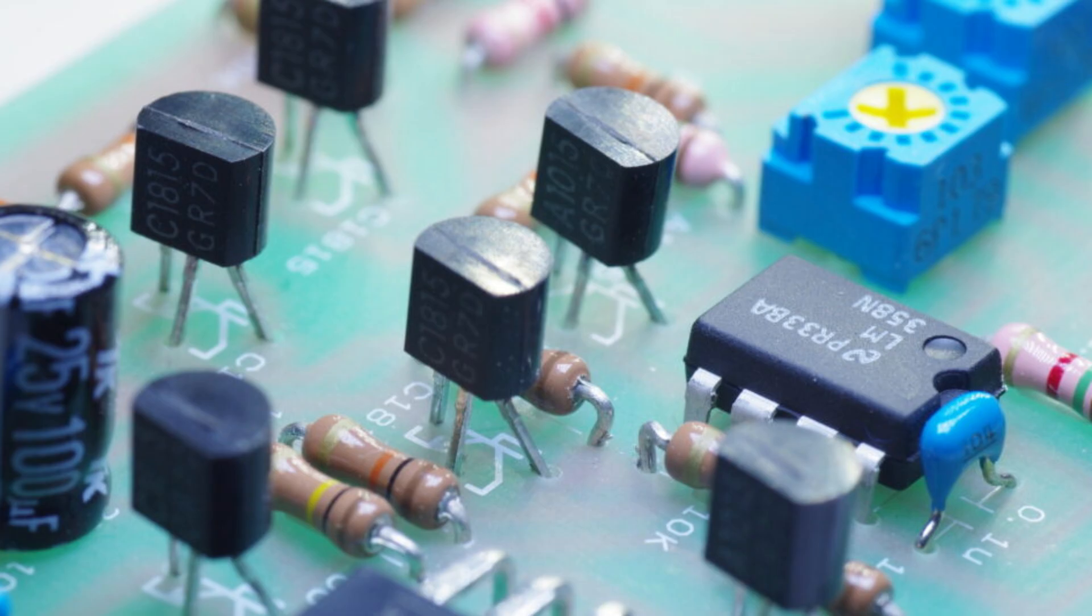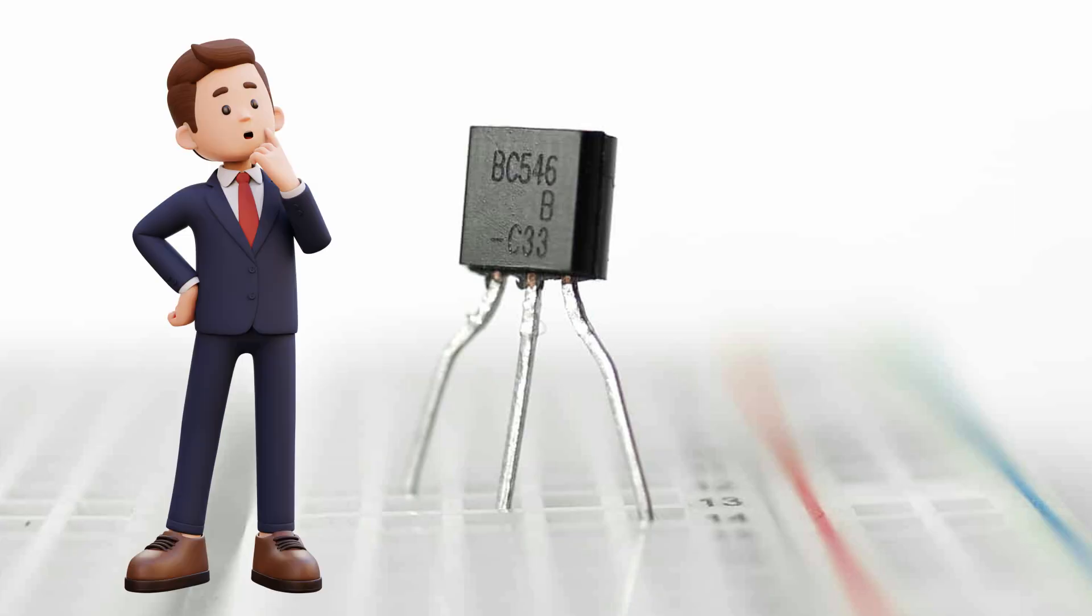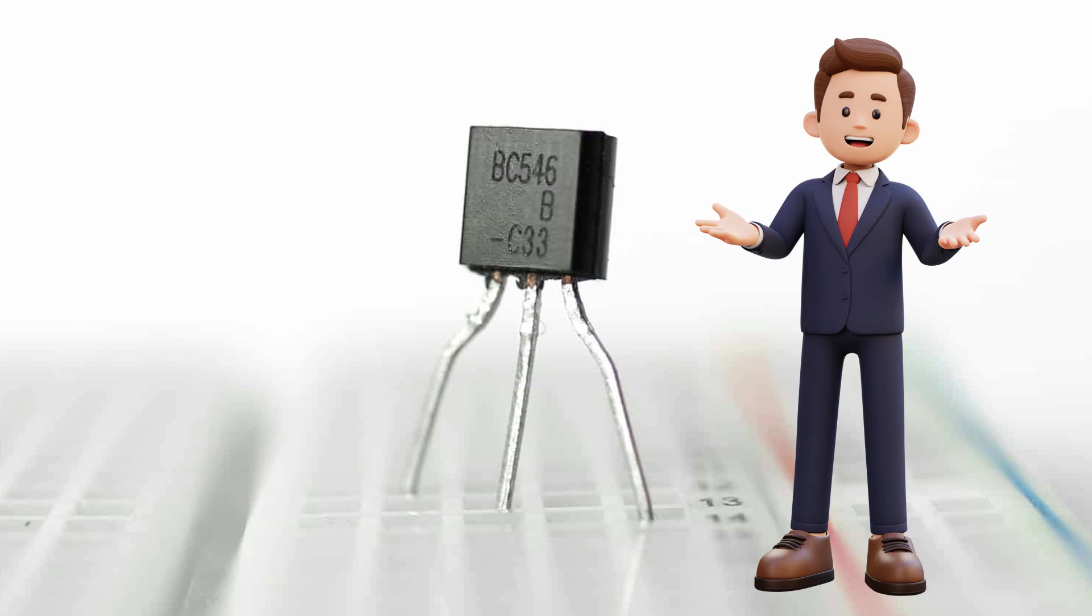But when you take a transistor out from an old circuit board, or buy it without a package, you might not know which pin is base, collector, or emitter. So here's a simple way to identify it.